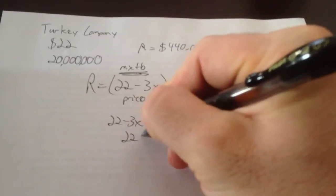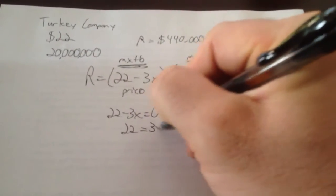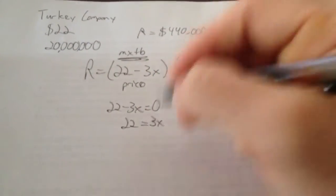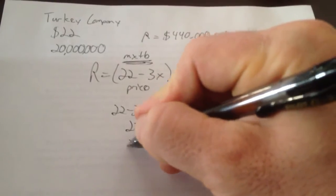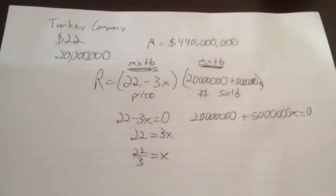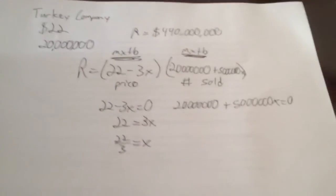So if you add this 3X over here, and you divide by 3 on both sides, you're going to get 22 over 3. It doesn't divide evenly. So it's going to be real pretty. It's going to have a nice little number for you.